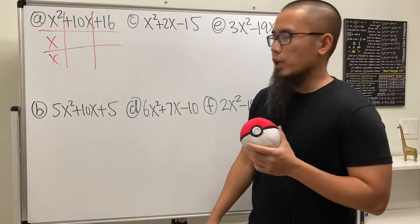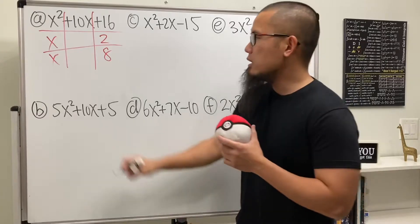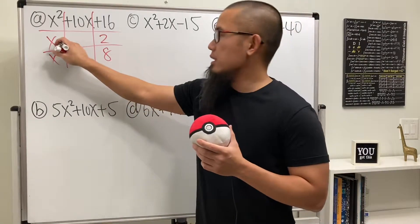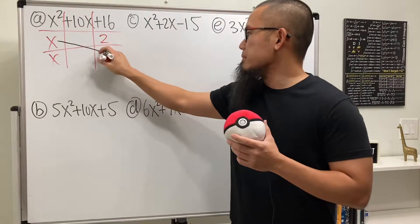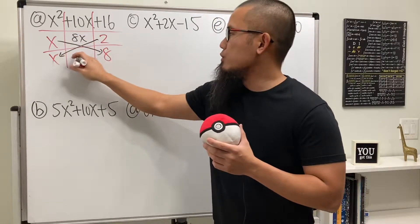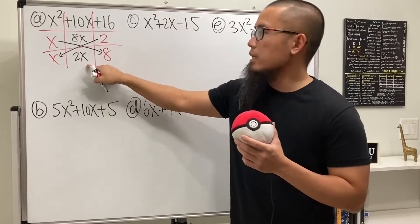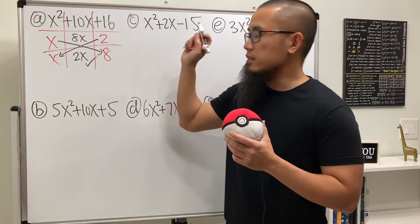But the correct combination that we are going to use is 2 and 8. Why? Because, you see, this is how we do it to check. You do 8 times x and you get 8x. You do this times that, which is 2x. Together, 8x plus 2x, we do get the 10x. So this is the correct combination.